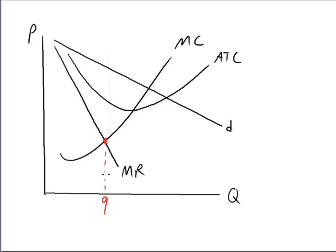Now, they have to figure out what price to charge. At that quantity, go up to the demand curve because it shows the relationship between quantity demanded and price. At that quantity, consumers are willing to pay this price P.